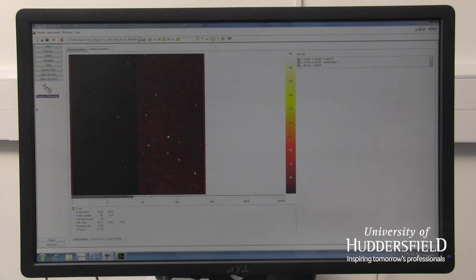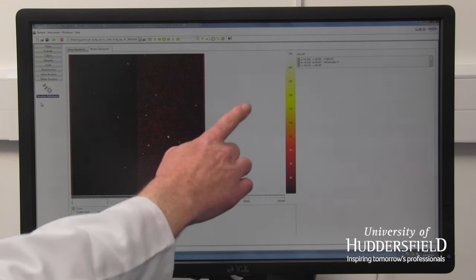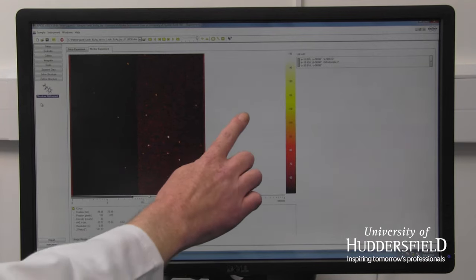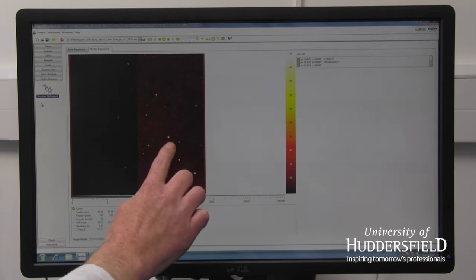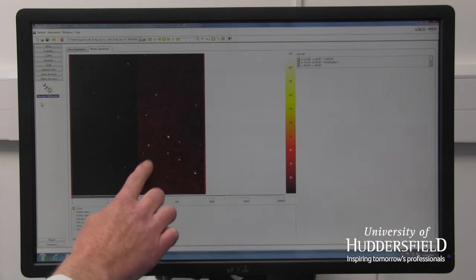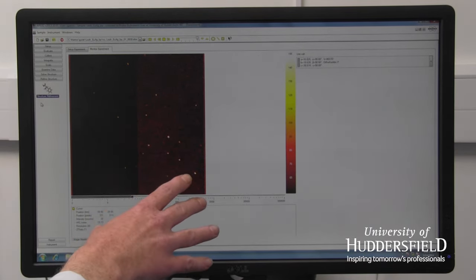Here you can see the results of your experiments. If you imagine in the machine, your crystal is about here, and the X-rays are coming in and being diffracted. These bright spots here are where the X-rays are being diffracted to. And their position and their intensity is all very important.